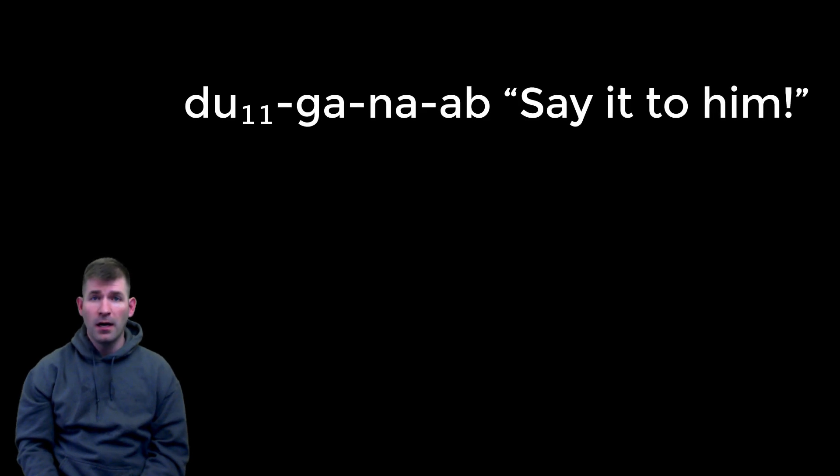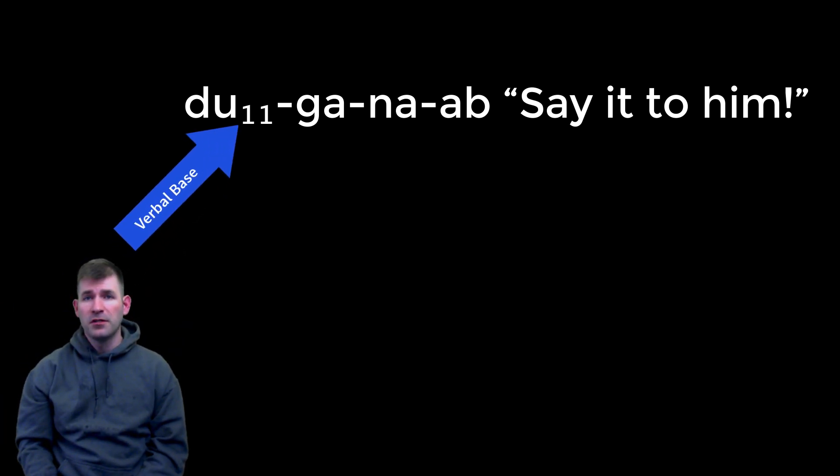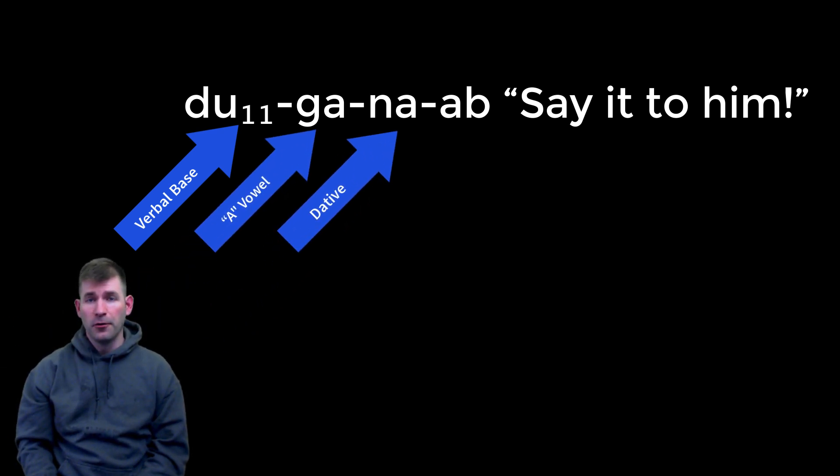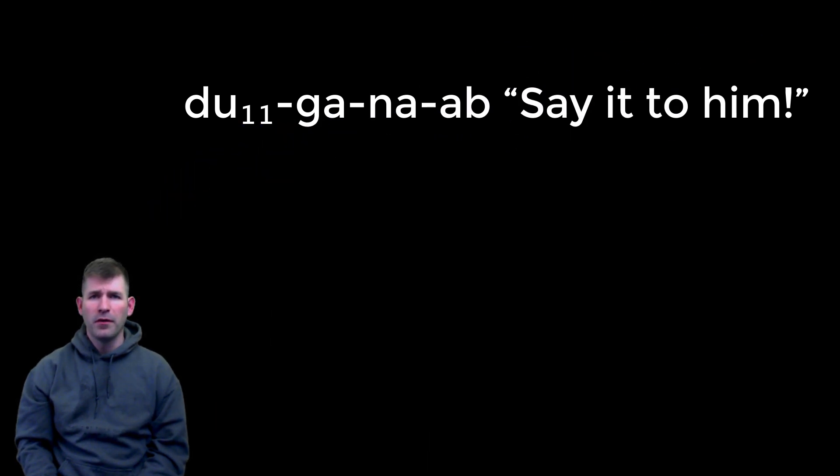Another example can be seen in the form du₁₁-e₁₁-gin₇-na-ab, 'say it to him!' Let's examine this form left to right: du₁₁-e₁₁ is the verbal base which has a g-i-o-slant, which is followed by the a-vowel. Na is the standard third person dative, b in ab is the third person inanimate object. The most important thing to remember with the imperative is that the verbal base will move to the front of the verbal chain and it will usually be followed by some sort of a-vowel and maybe a verbal chain.